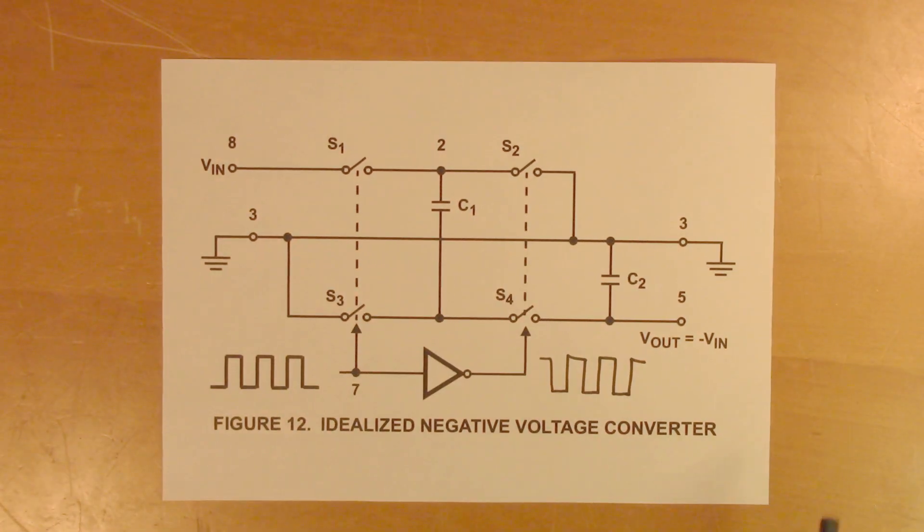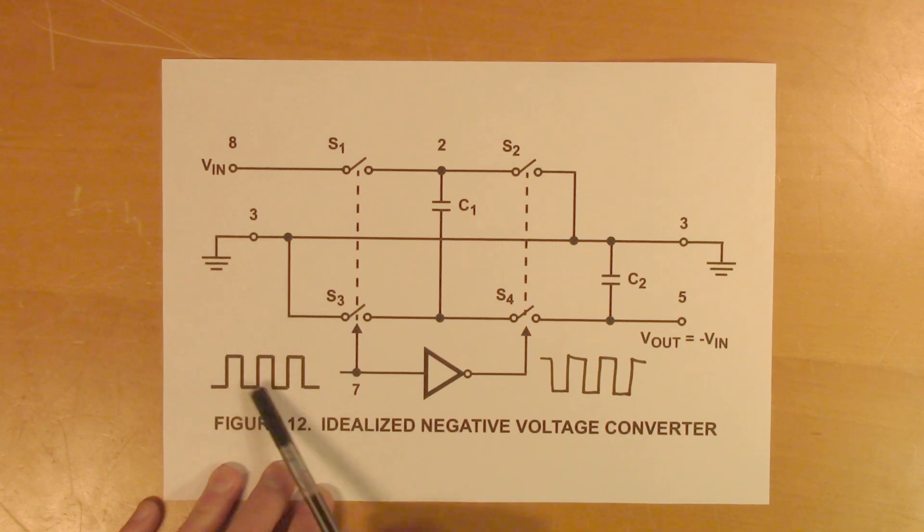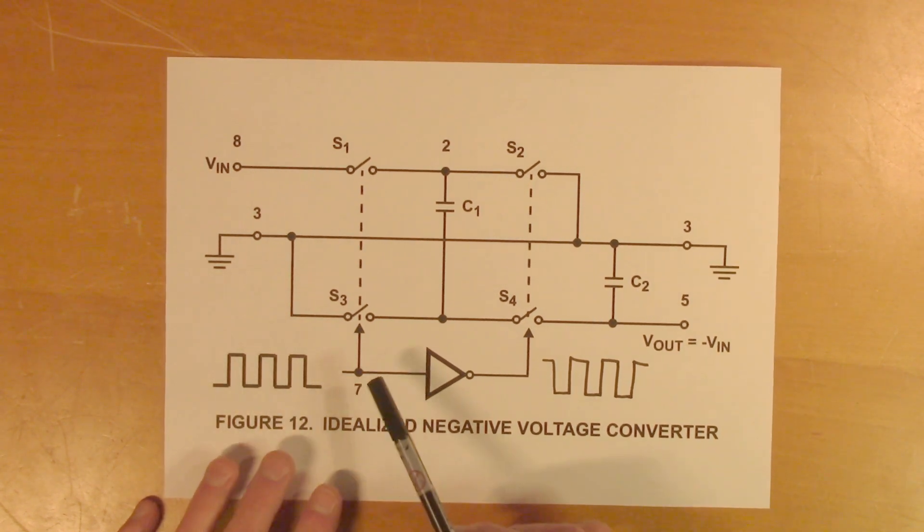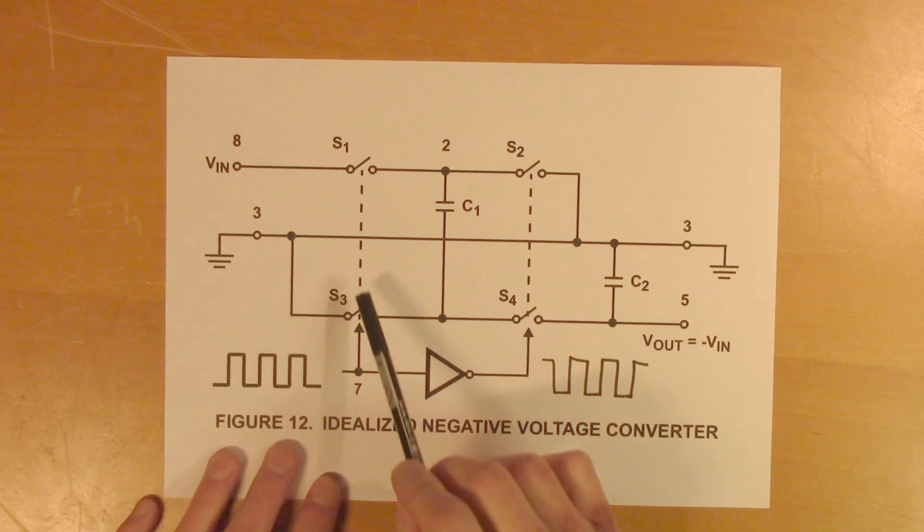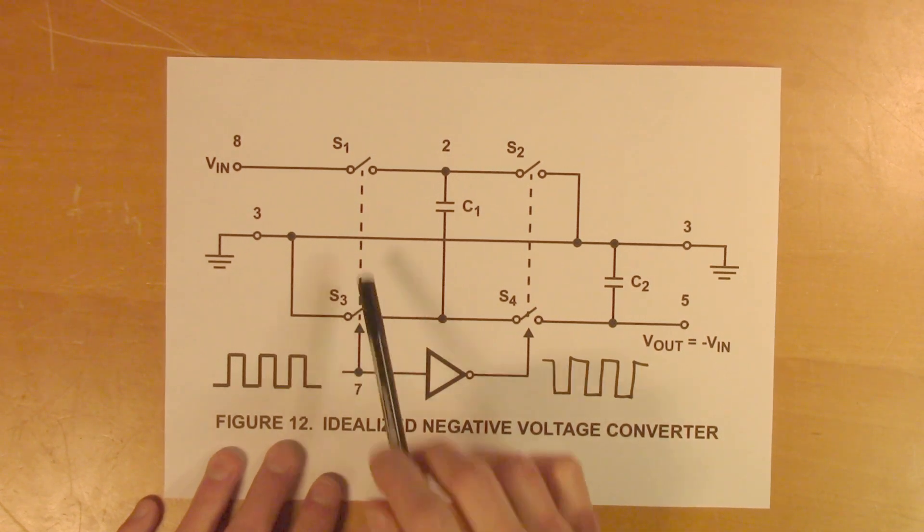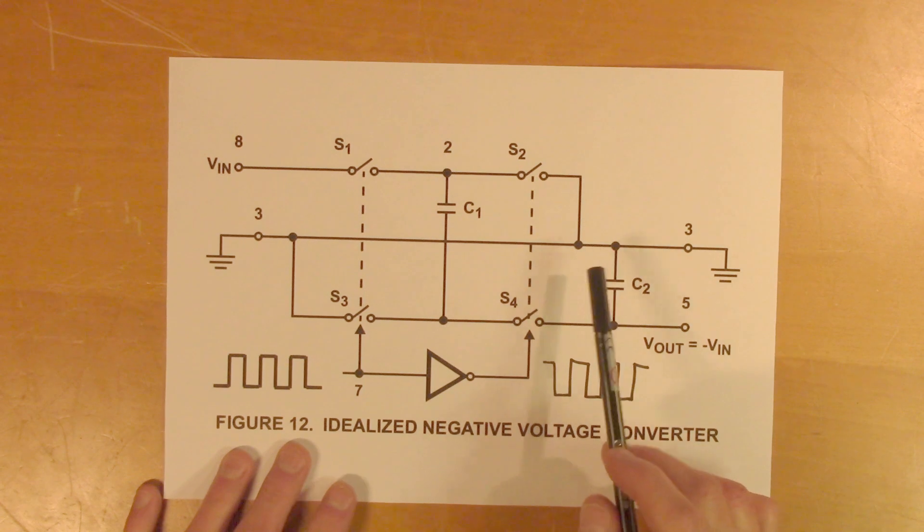So let's look at what happens when the control signal is high and when it's low. So let's start with high. If the control signal is high here, let's say that means that these switches will be closed, and these two switches will be open.